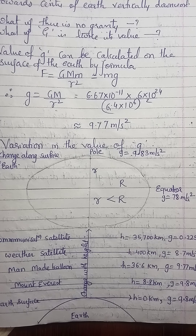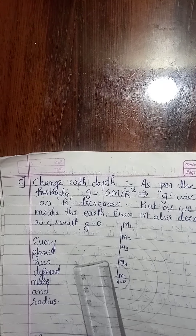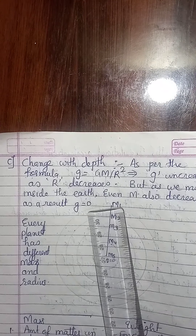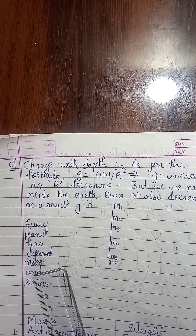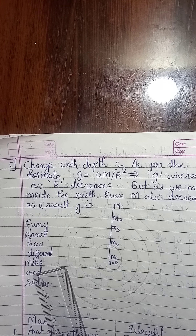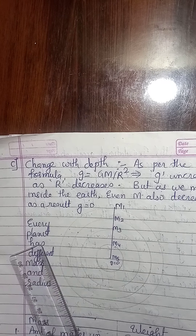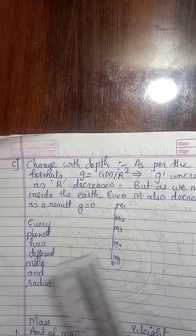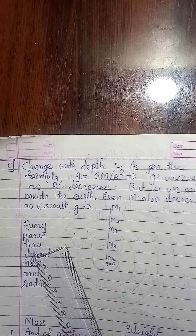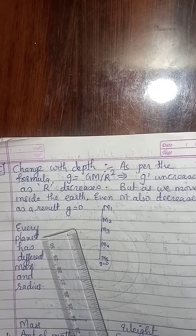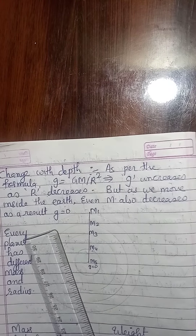One more reason for variation in the value of g is change in depth. According to the formula, as R decreases, g should increase — but this does not apply when we go deeper inside the Earth. As we go deeper, the gravity actually goes on decreasing instead of increasing.